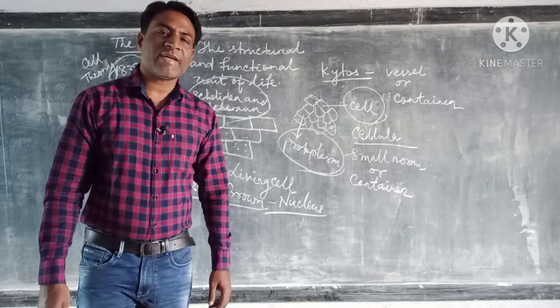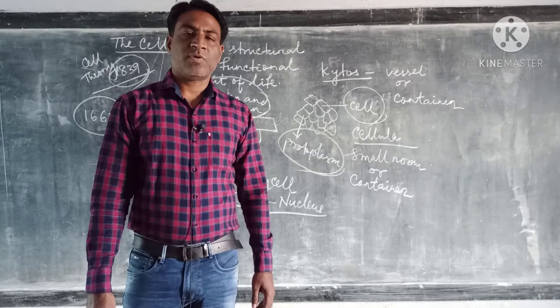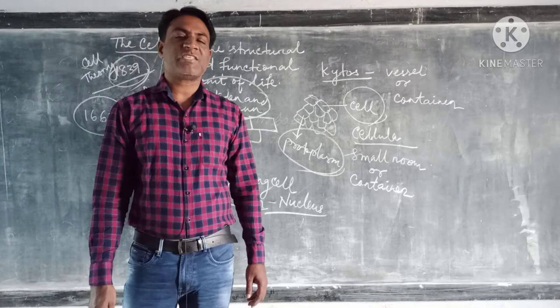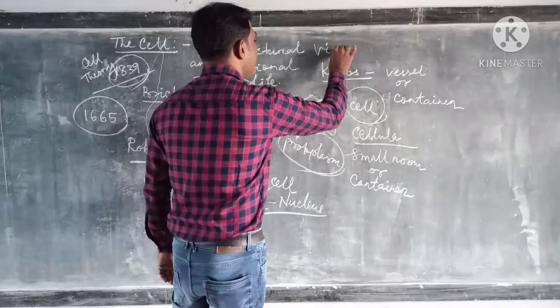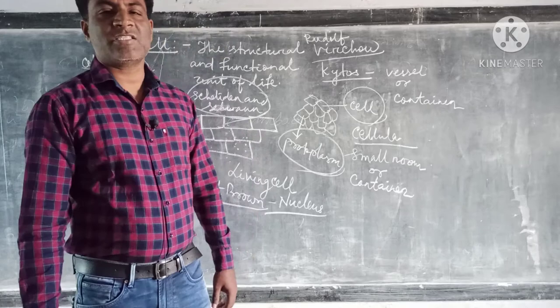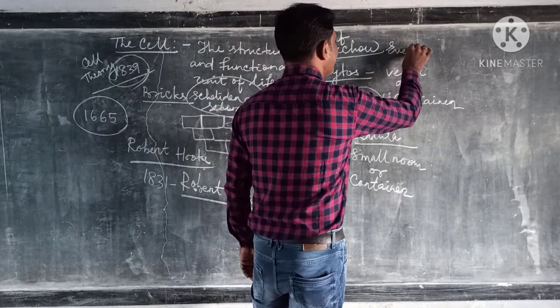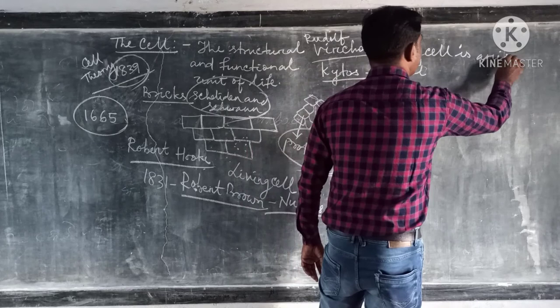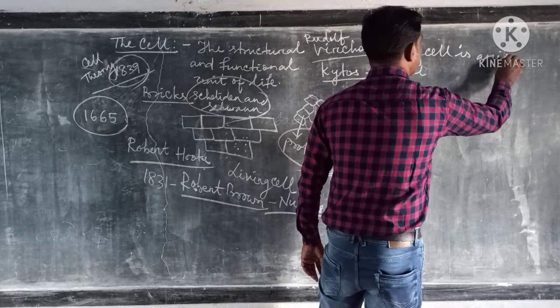Notice another scientist named Rudolf Virchow. He states that every cell arise from the pre-existing cells. Rudolf Virchow states that every single cell is arising from the pre-existing cell.